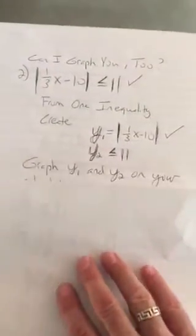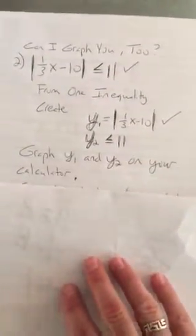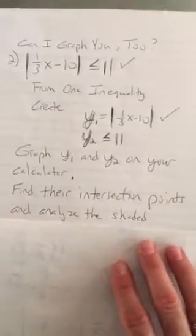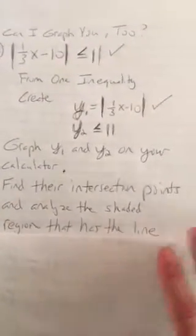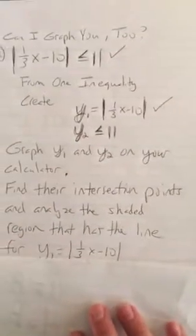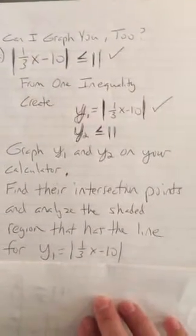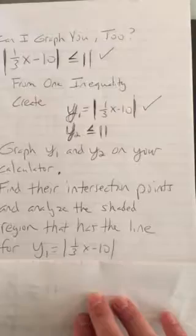What we're going to do is graph y1 and y2 on your graphing calculator. Then we're going to find their intersection points, and we're going to analyze the shaded region that has the line for y1 equals the absolute value of 1 third x minus 10. So we're going to go ahead and get our graphing calculator.